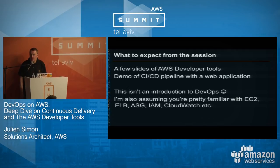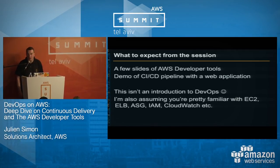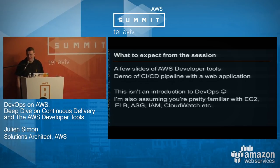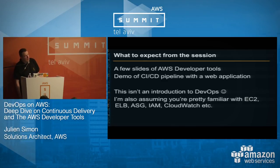A couple of points before I start: this is definitely not an introduction to DevOps. If you have zero idea what DevOps is and were looking for a DevOps tutorial, this really isn't it — you can try to find another session. I'm also assuming that you're reasonably familiar with EC2, ELBs, autoscaling groups, and the core AWS concepts.